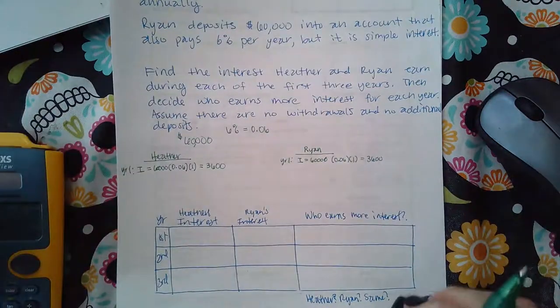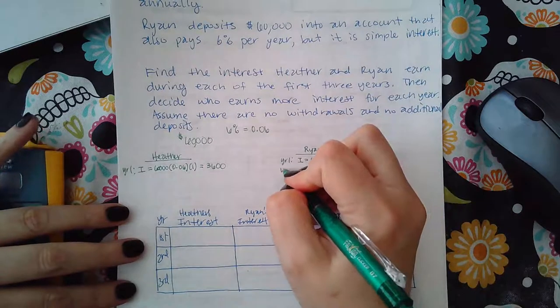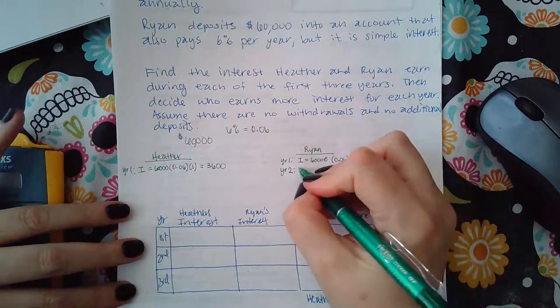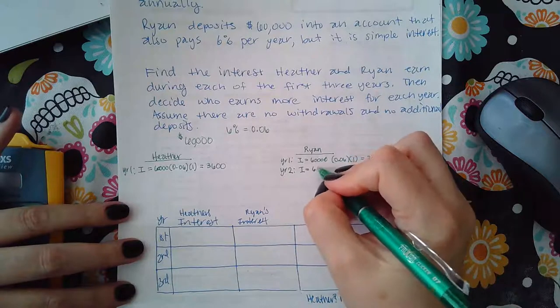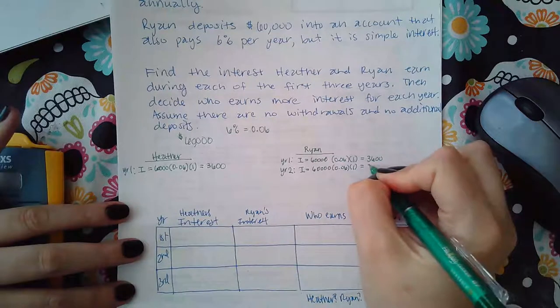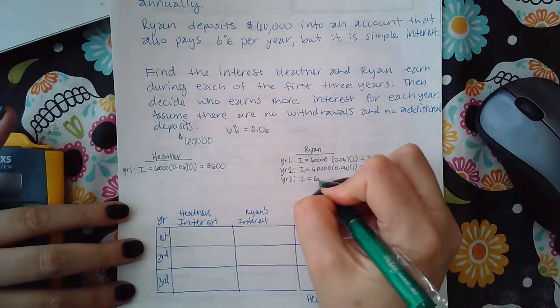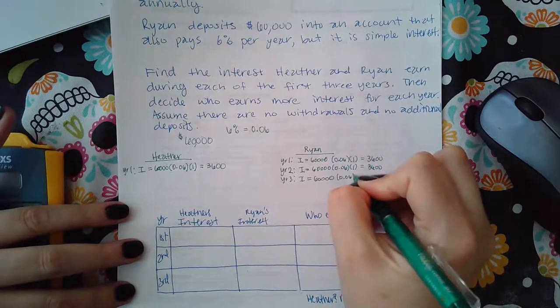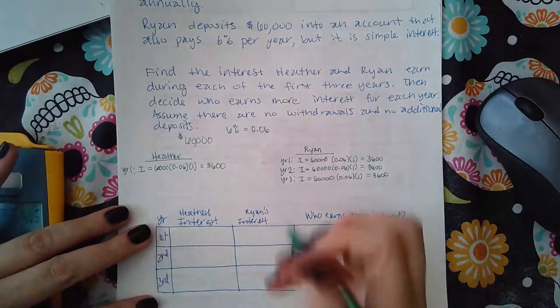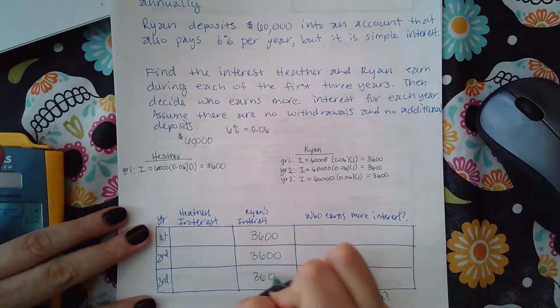Here's where the difference comes into play. It doesn't happen until year two. For simple interest, which is what Ryan has, simple interest means that the interest is the same for every single year. So even year three will be the exact same amount. That's what simple interest means. It means you just calculate the interest and it's the same every single year.